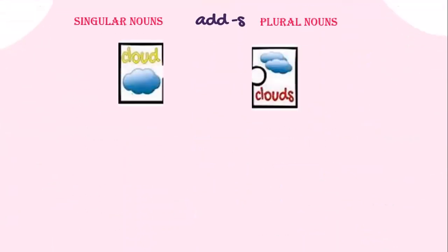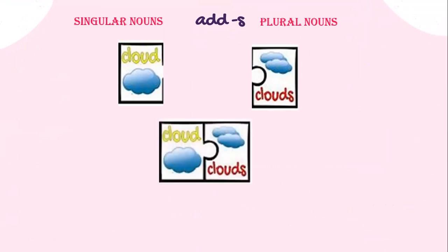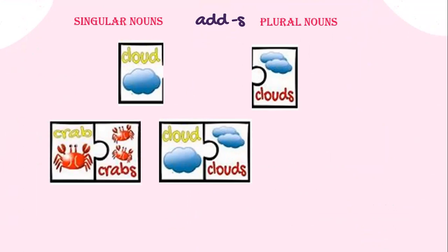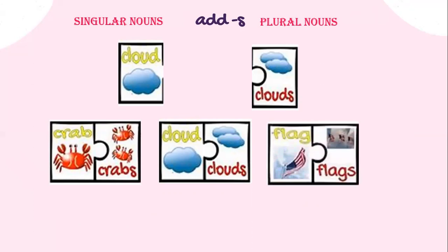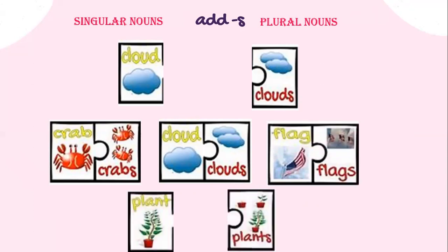Now let's look at the noun cloud. This noun ends with a consonant letter — I just add s to make it plural: cloud, clouds. Similarly: crab, crabs; flag, flags; plant, plants. If a noun ends with a consonant letter, we just add s.